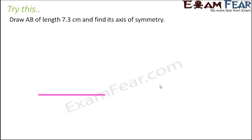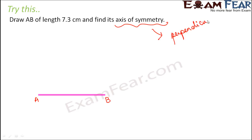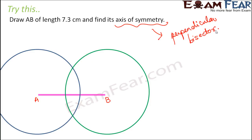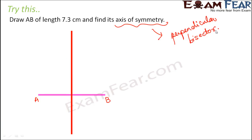So let's say you have a line segment AB of length 7.3 centimeters. What line would divide AB into two equal halves such that the two halves exactly cover each other when folded? Absolutely, that could be nothing but the perpendicular bisector, because the perpendicular bisector bisects the line — it divides it into two equal halves. So let's draw the perpendicular bisector. A as center, radius slightly greater than half AB — draw a circle. B as center, radius slightly greater than half AB — draw a circle. Join the two intersection points and you get the perpendicular bisector, which is also the axis of symmetry for line segment AB.